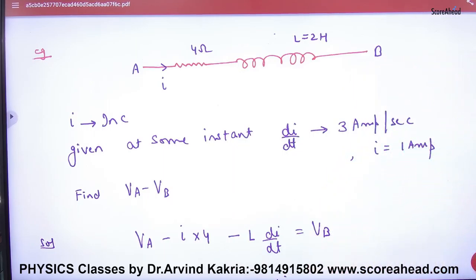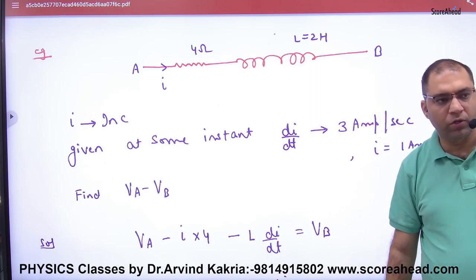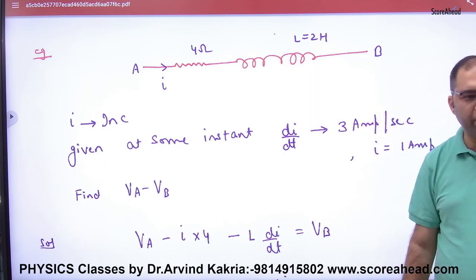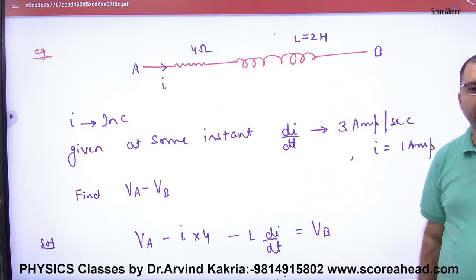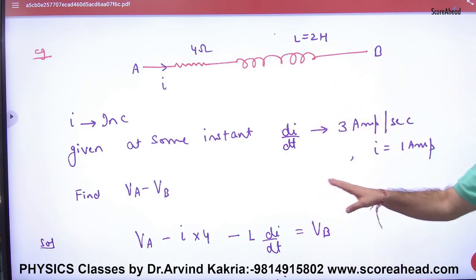If current is increasing and di by dt is 3 ampere per second, so 3 ampere current is increasing in 1 second, and in any instant current value is 1 ampere. So current is 1 ampere, you have to find potential difference between A and B.